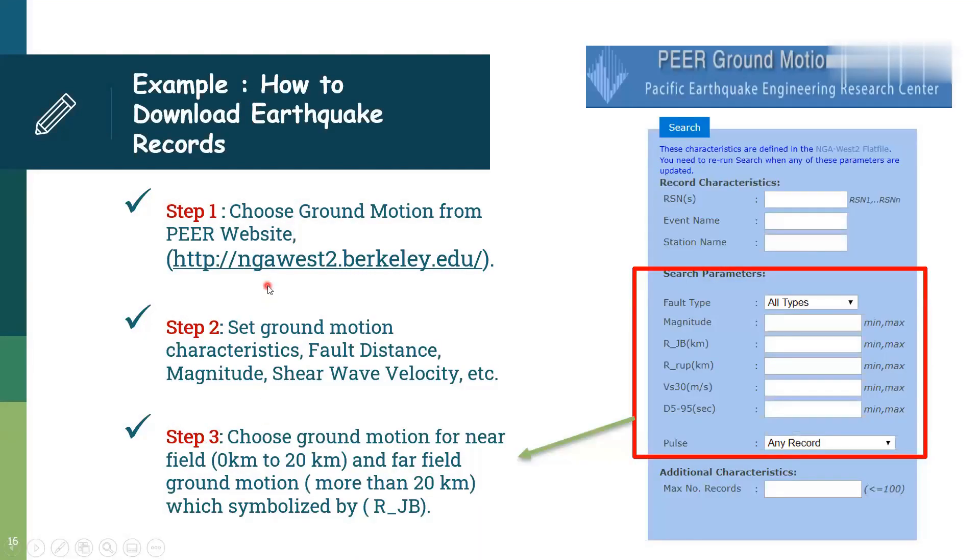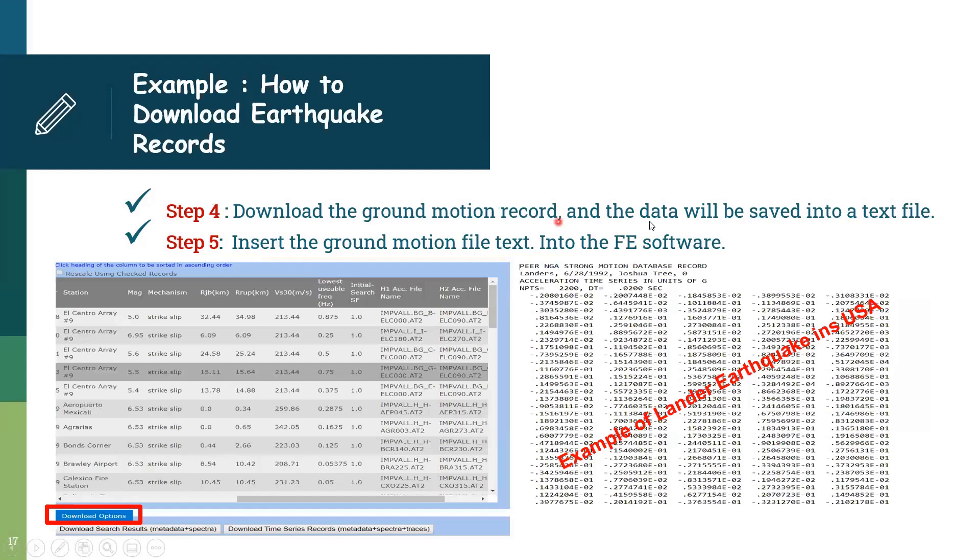In order to download this earthquake, use the PEER website. This is step one: Choose the ground motion from PEER website. Step two: Set ground motion characteristics like fault distance, magnitude, shear wave velocity, etc. Here the fault type, the magnitude, the distance, the shear wave velocity, and the pulse. And choose the ground motion either near field or far field based on the epicentral distance. Then you can download the ground motion record and that will be saved in a text file. Insert this ground motion file into the finite element.